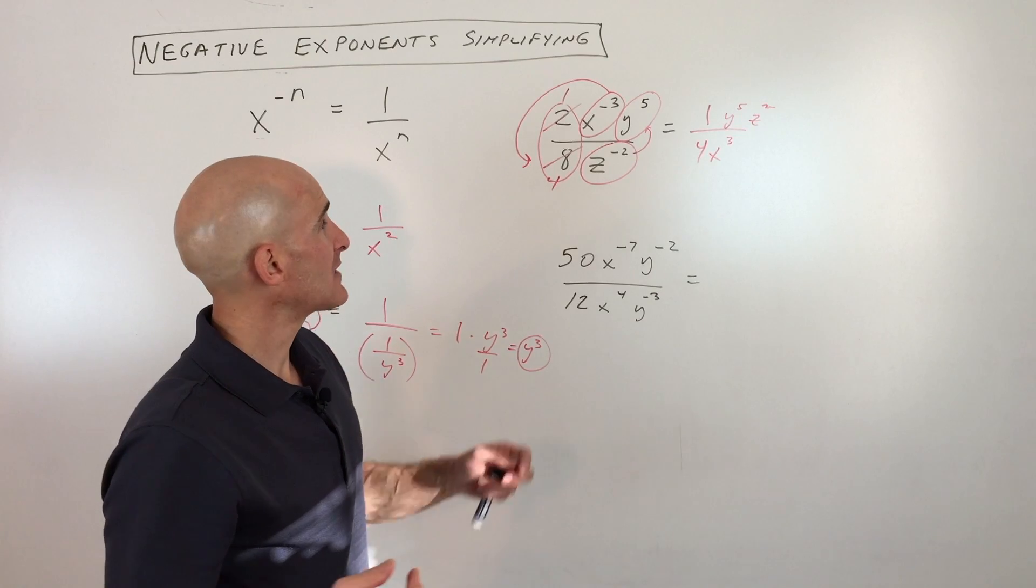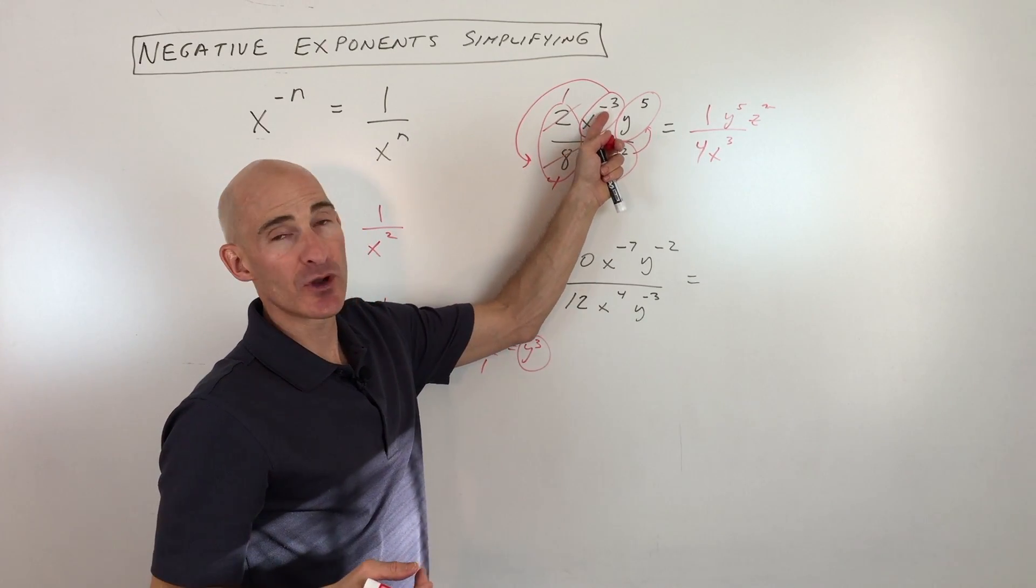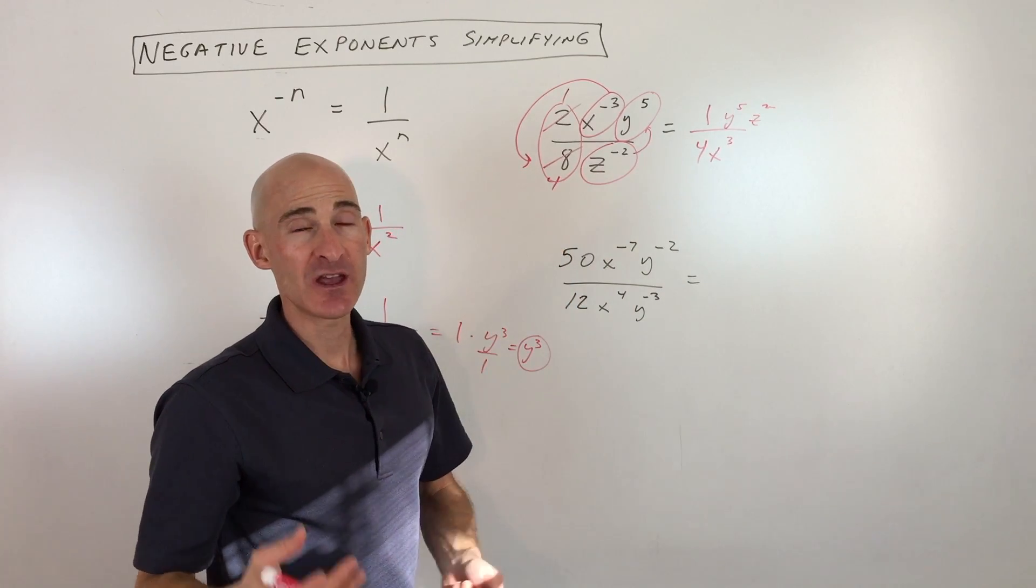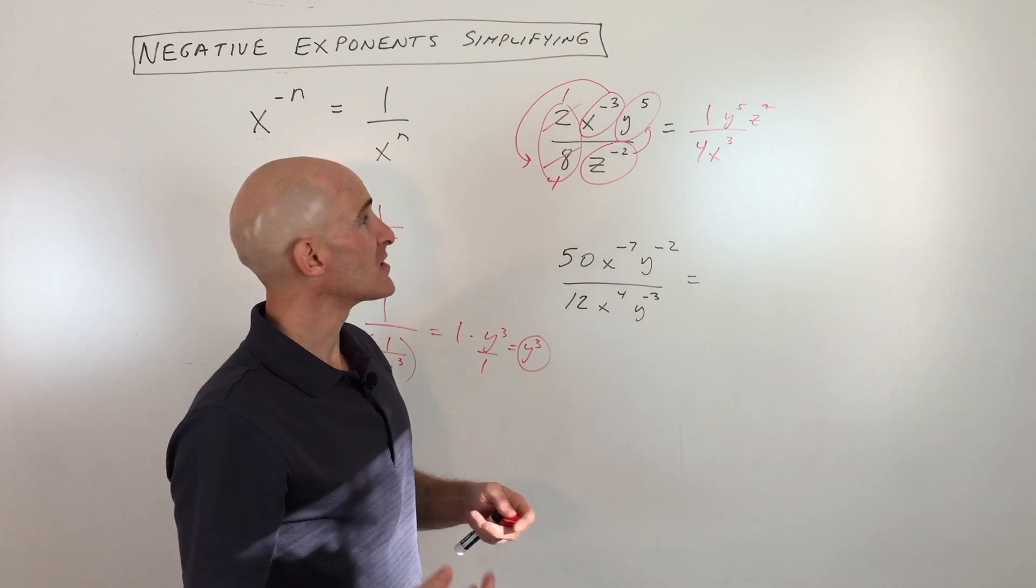Now just one quick note. A lot of times when students see the negative exponent, they think to themselves 'oh, that makes the number negative,' and you don't want to make the number negative. You just want to take the reciprocal. So to show you another example along that same line...